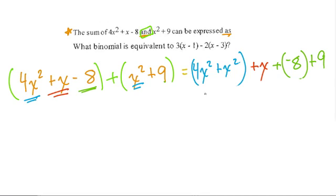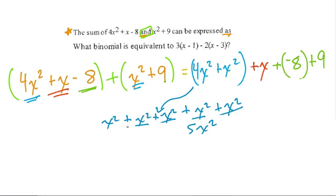Well, first of all, we have 4x squared and x squared. This means, of course, you have 4 x squareds. That's what 4x squared means. And then we're adding another x squared. That's 5x squared. 1, 2, 3, 4, 5.